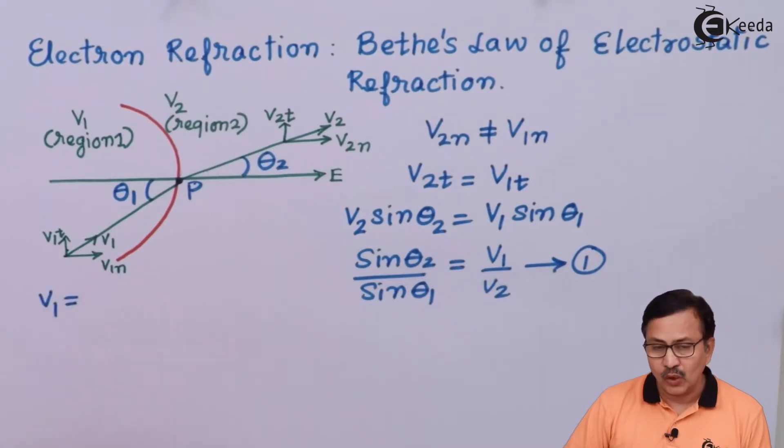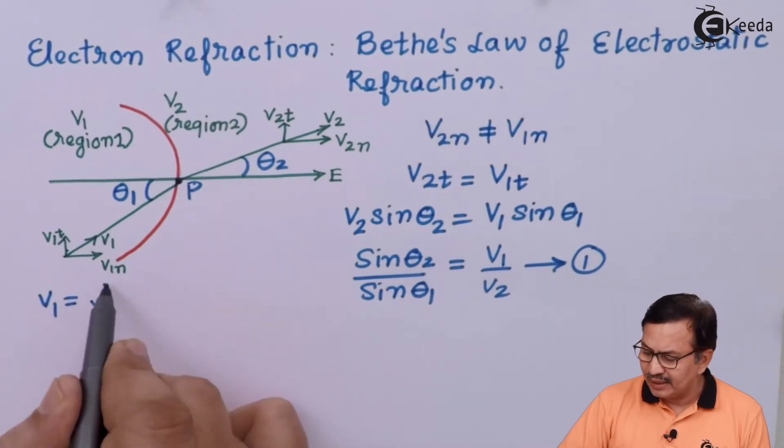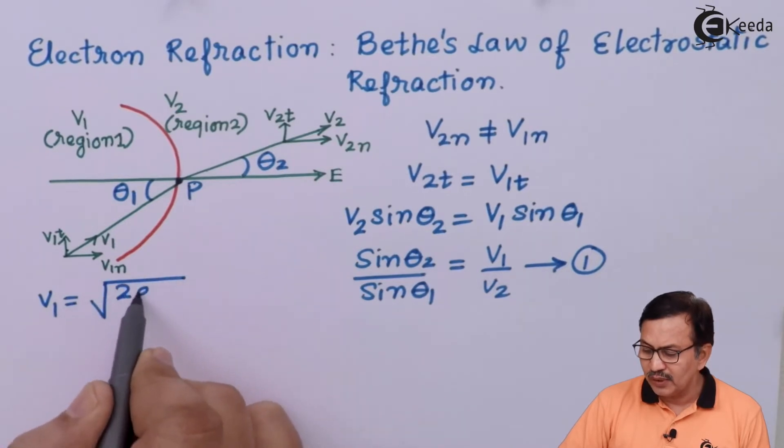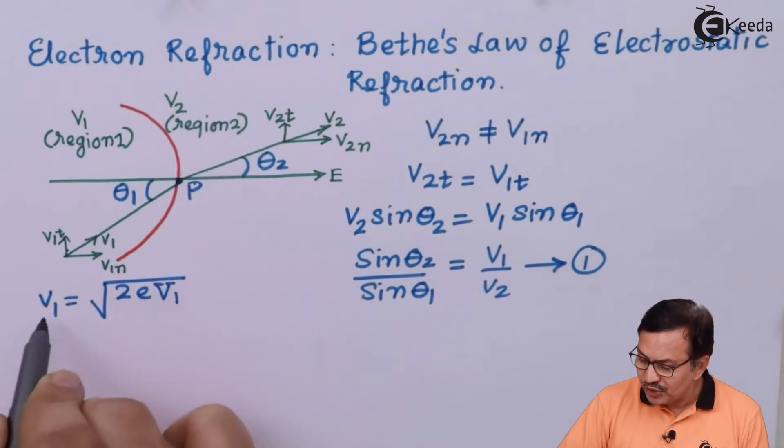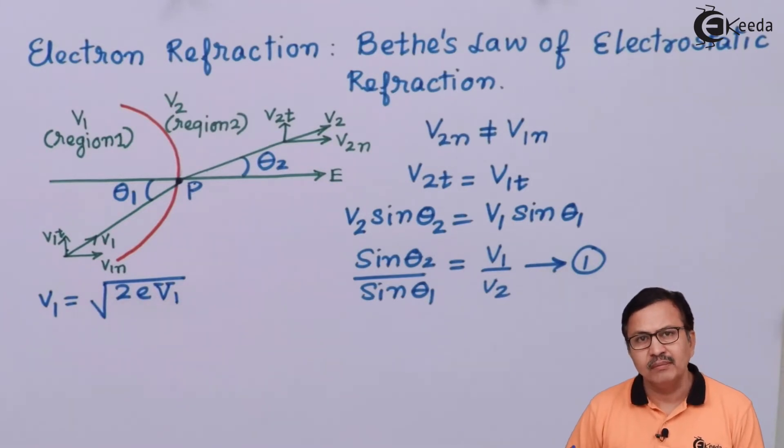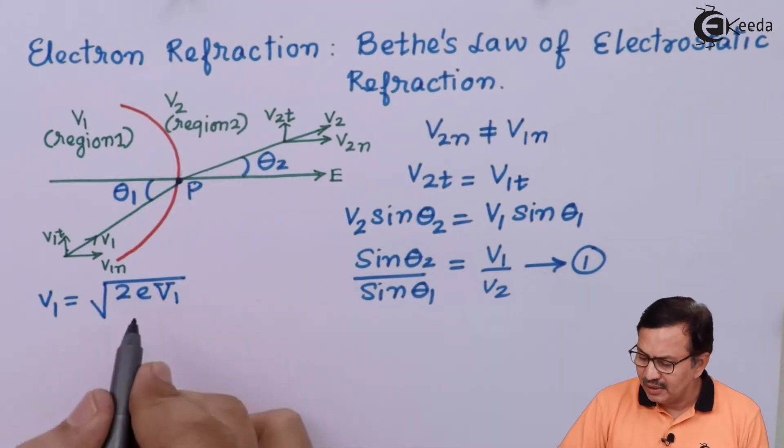V1 can also alternatively be written as square root of 2E into the potential V1, through which this electron has been accelerated, divided by the mass of the electron.